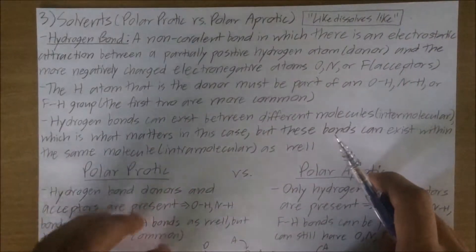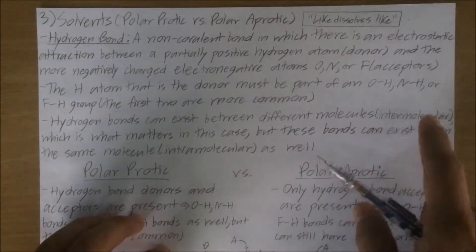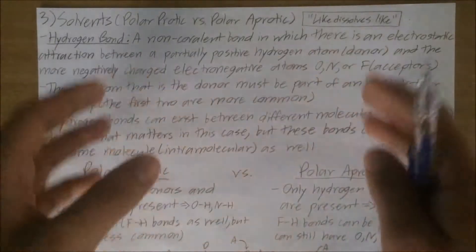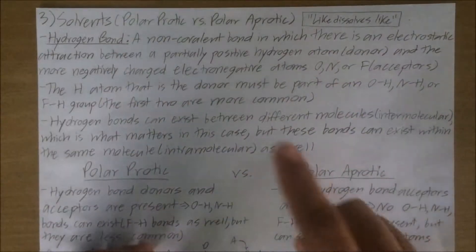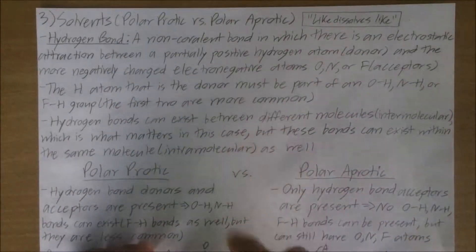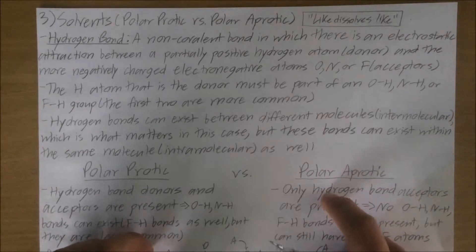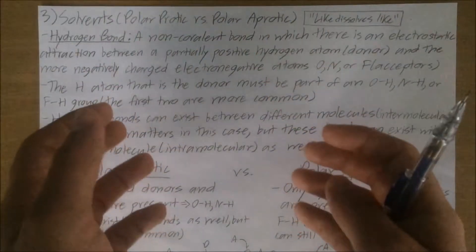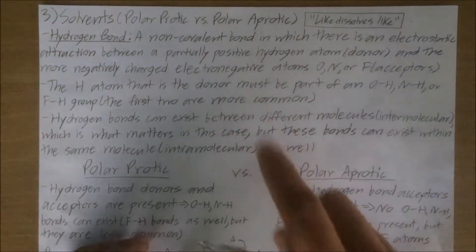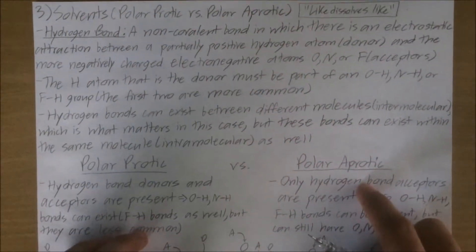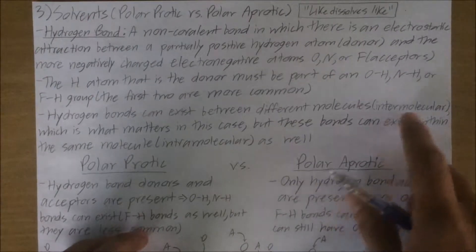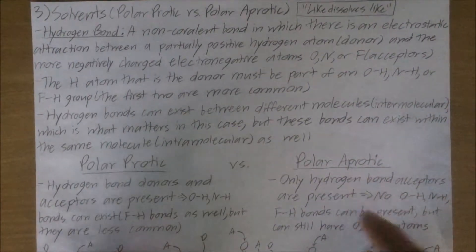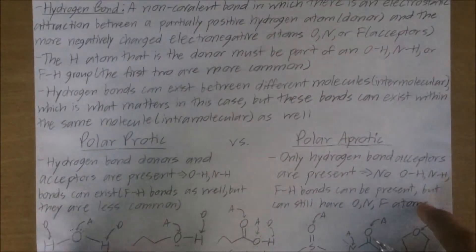Hydrogen bonds can either be intermolecular, meaning that they take place between two or more molecules, or they can be intramolecular, which means that they take place within the same single molecule. However, in this video we're only going to be talking about intermolecular hydrogen bonds, because that's what matters in this case.